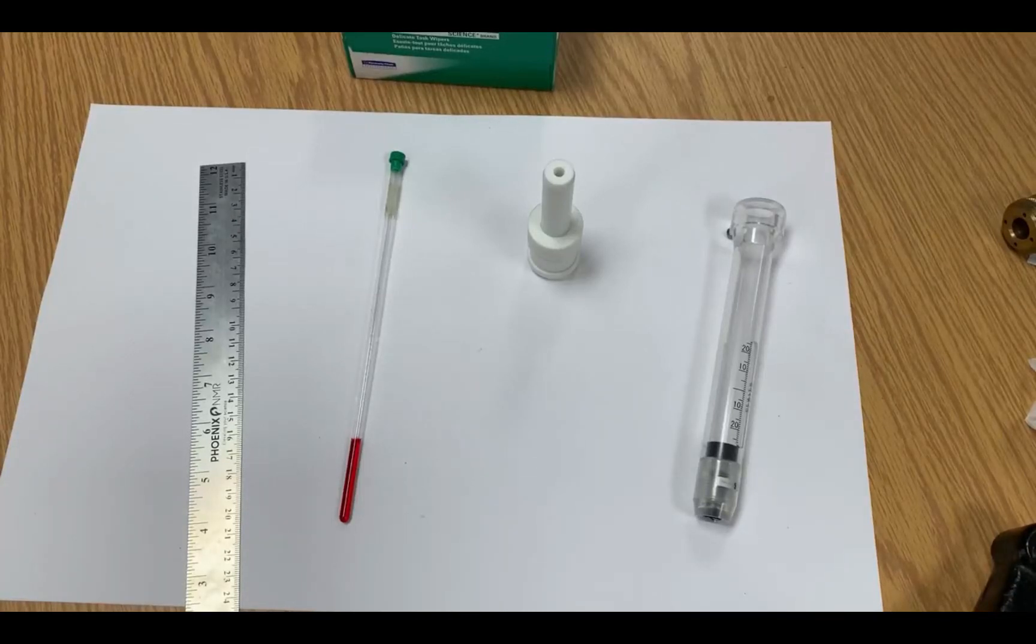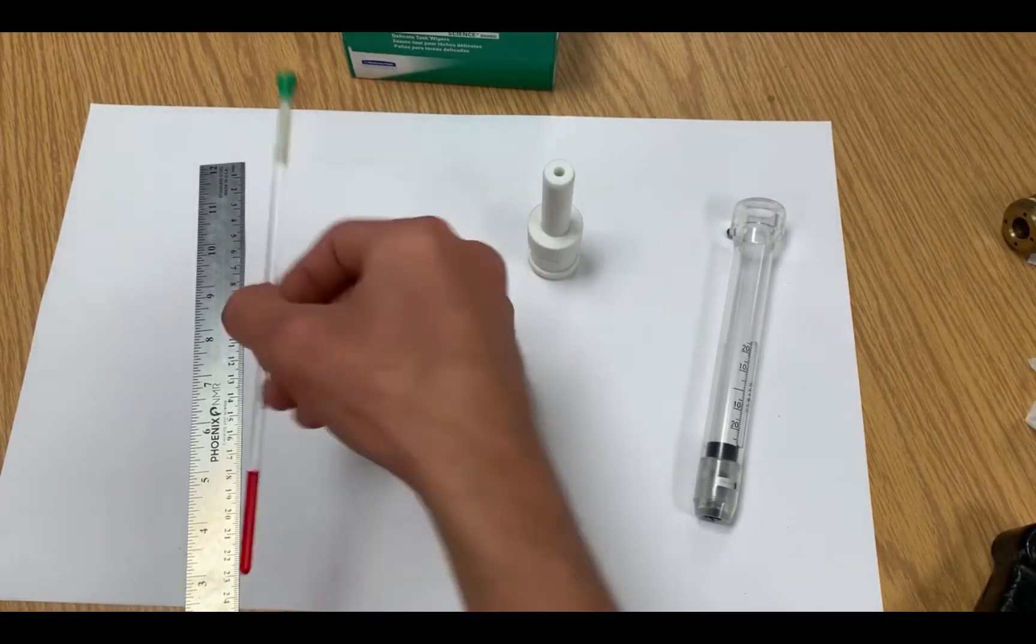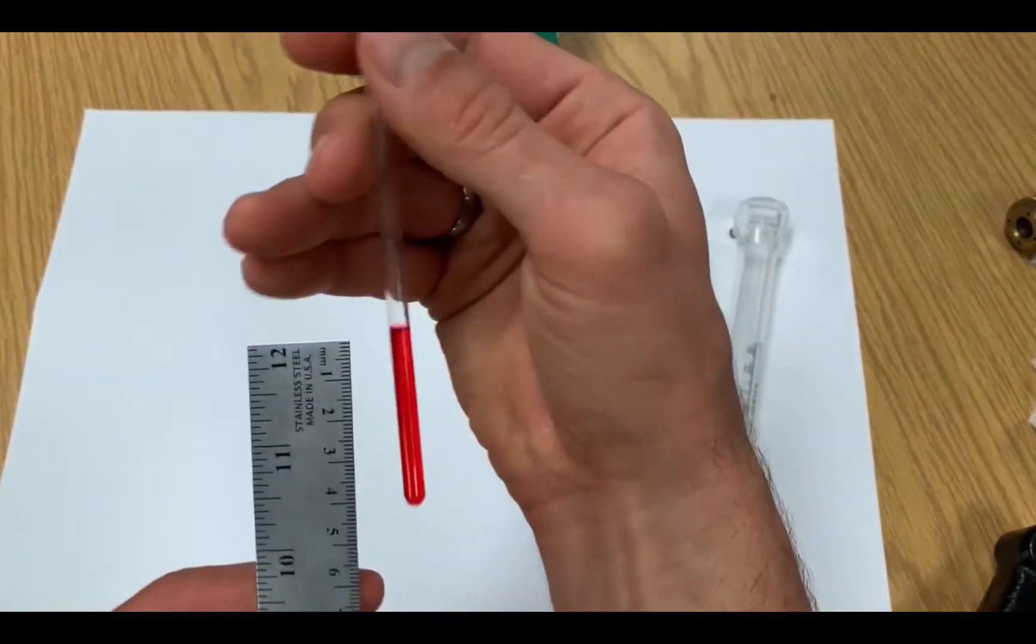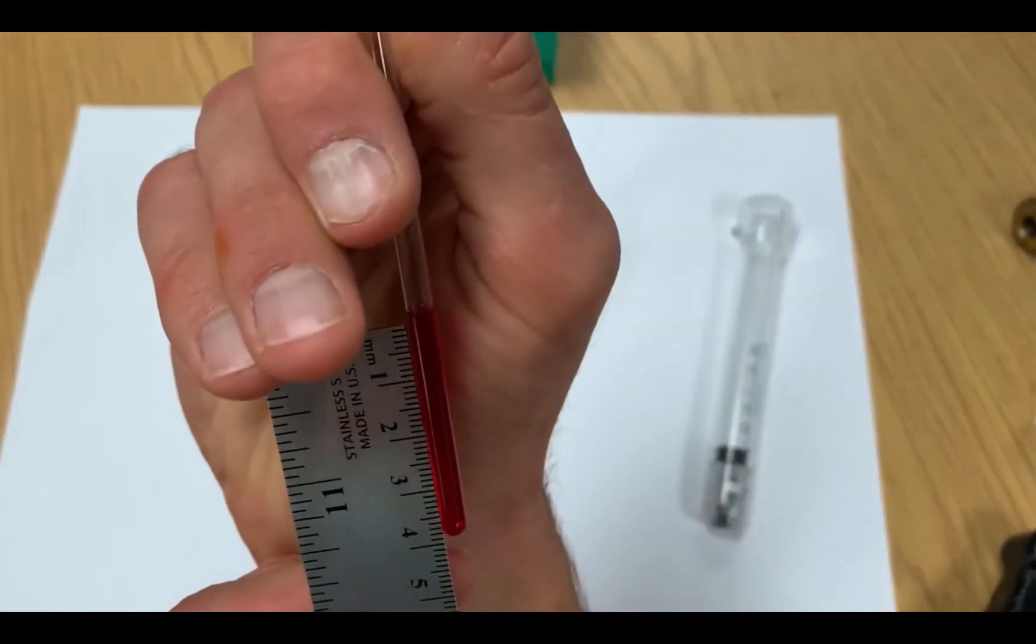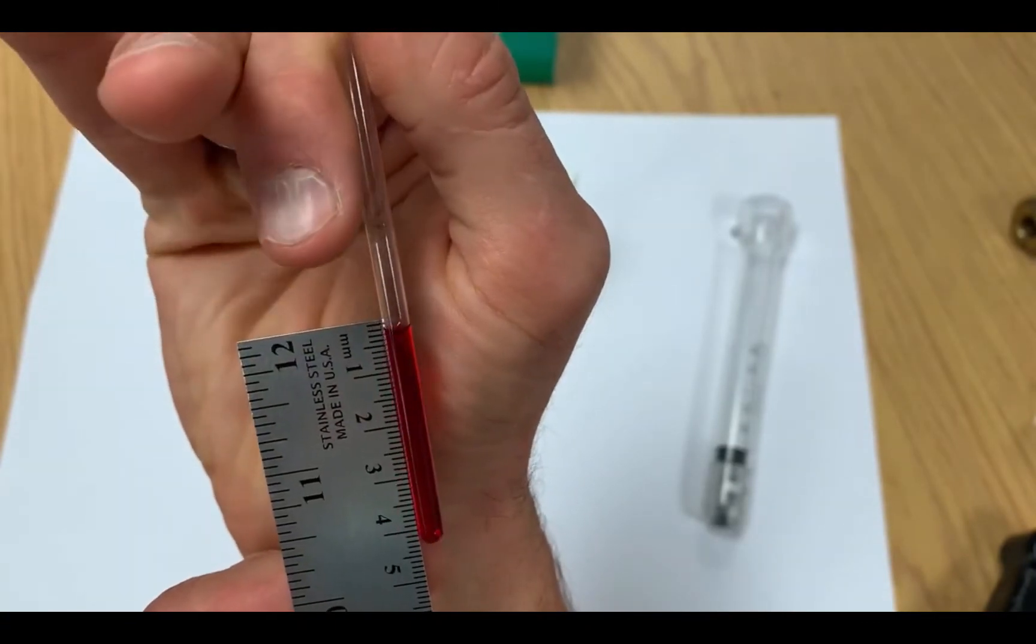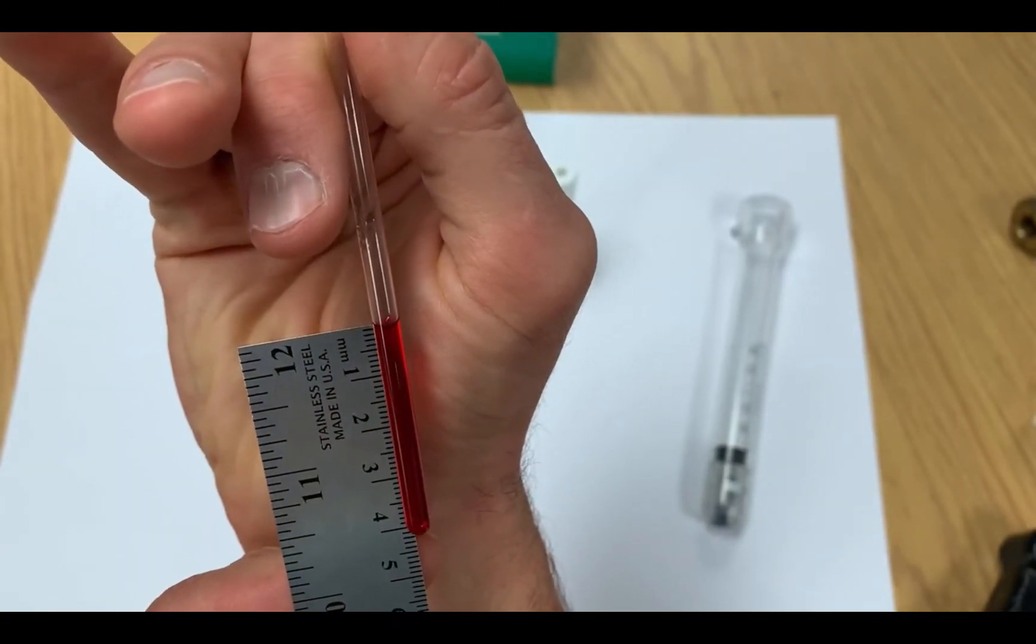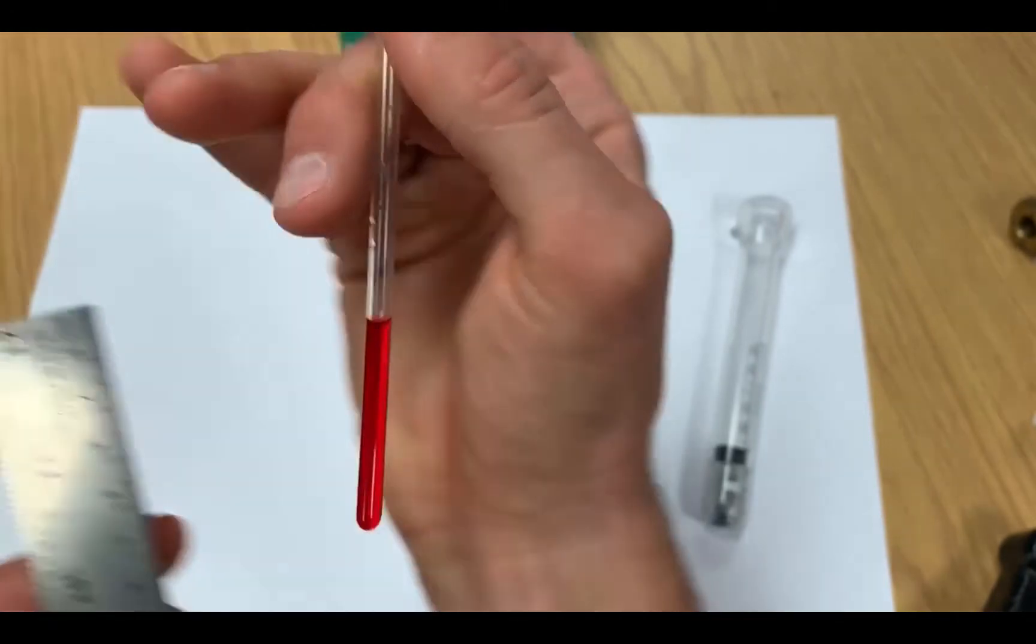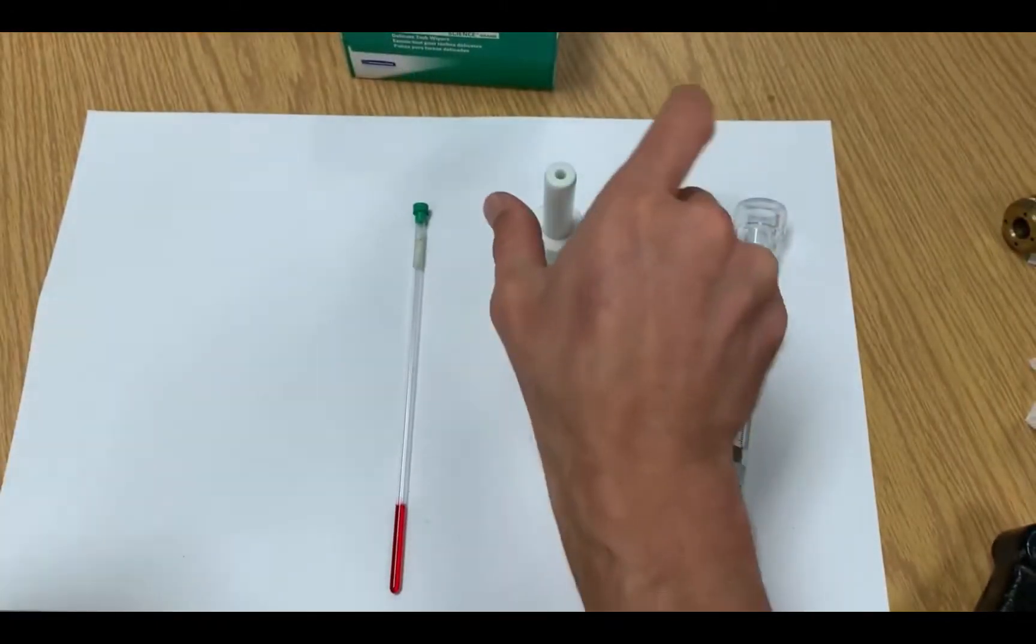Consistent sample preparation is critical in obtaining quality results. On most JUL systems, you want to aim for 4 centimeters of sample height. Note that you shouldn't rely on a volume, as the tolerances of inner diameter of NMR tubes can vary significantly with price of the tube.